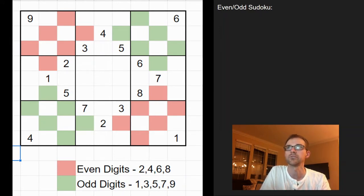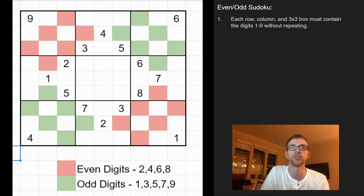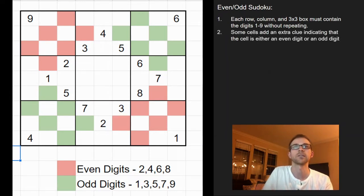So the rules are pretty simple. Just like in regular sudoku, each row, column, and 3x3 box must contain the digits 1 through 9. But the added rule here is that some cells give you a clue of whether it's going to be an even digit or an odd digit within the cell.